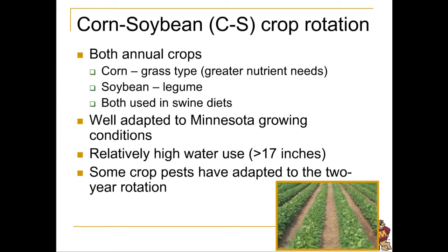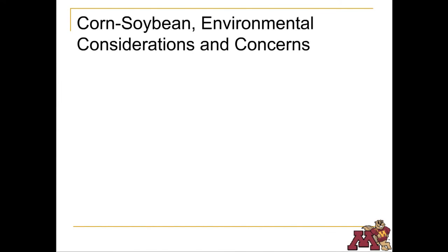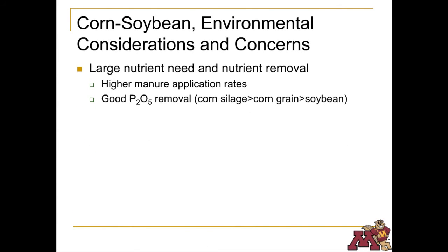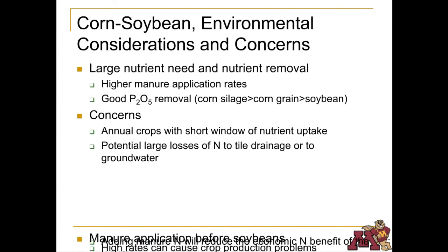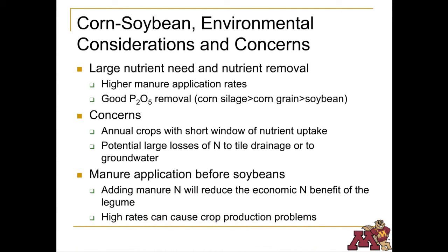Unfortunately, some insects have adapted to this two-year corn-soybean rotation. In general, a corn-soybean rotation requires large amounts of nitrogen and phosphorus. This is good for getting the most out of manure, but the high rates of nutrient application increase the potential for nitrogen to be leached into the groundwater. It's interesting to note that soybeans have the ability to fix nitrogen, but they will also use nitrogen if it is available in the soil.